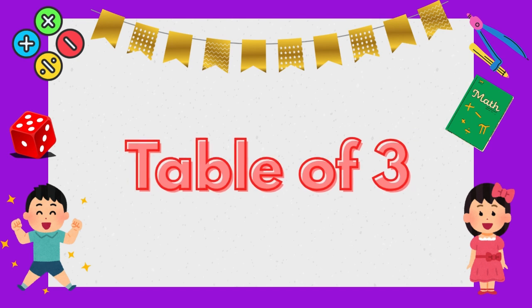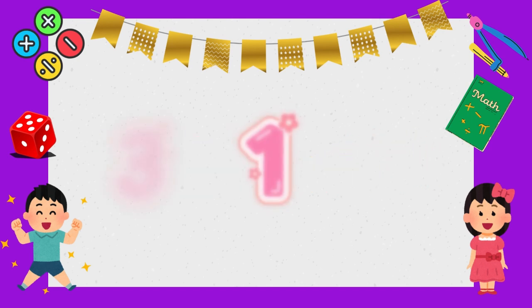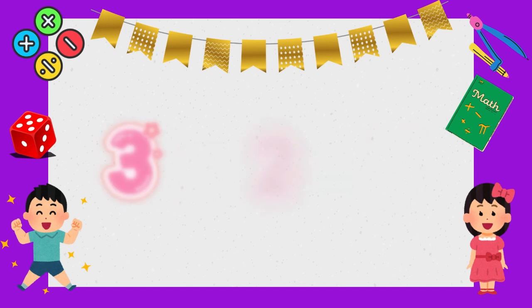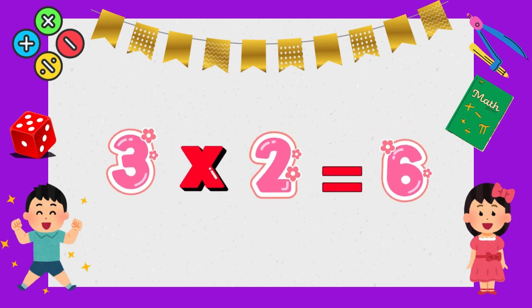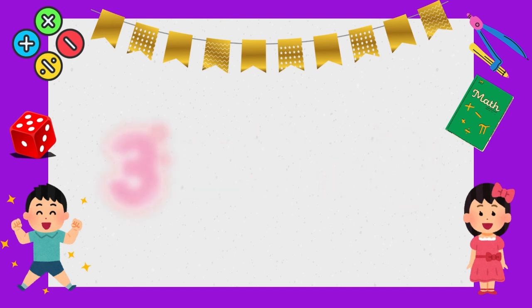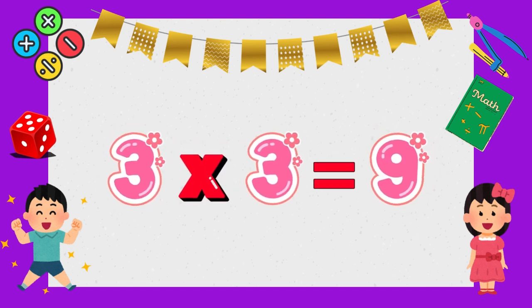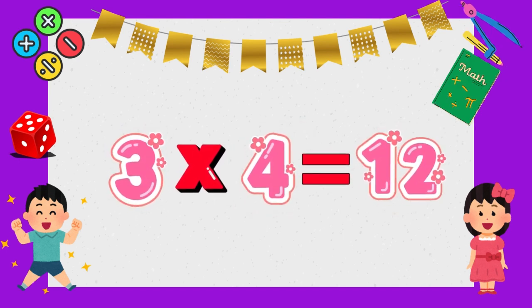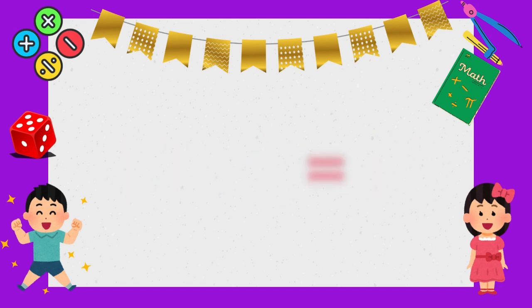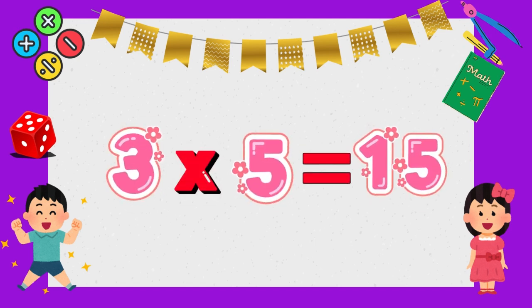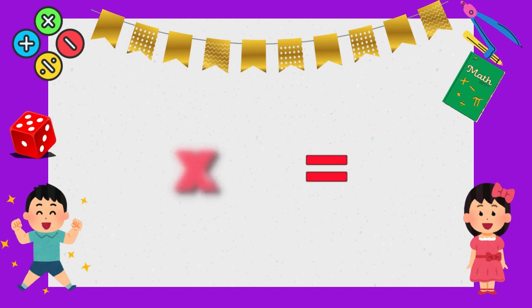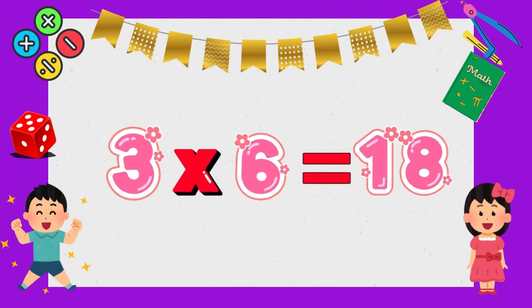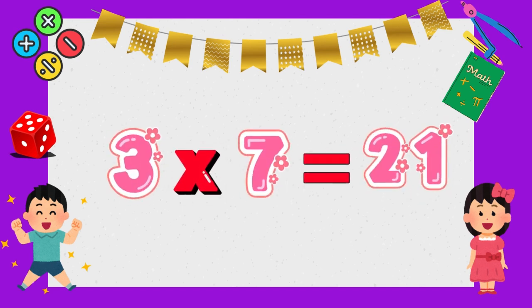Let's learn! Table of Three. 3 times 1 is 3. 3 times 2 is 6. 3 times 3 is 9. 3 times 4 is 12. 3 times 5 is 15. 3 times 6 is 18. 3 times 7 is 21.